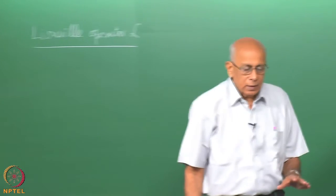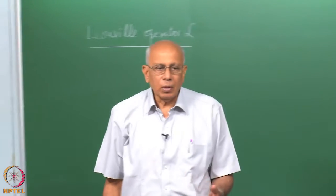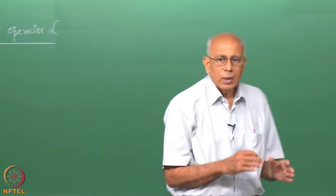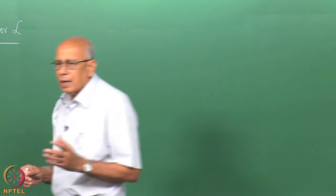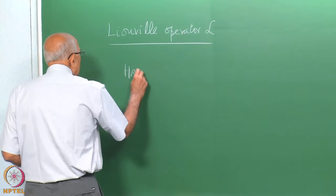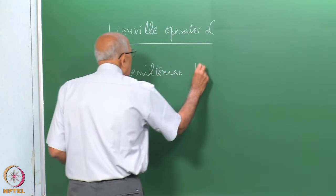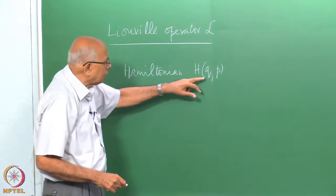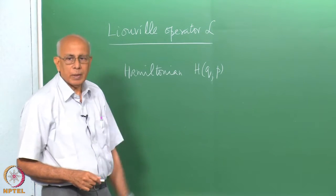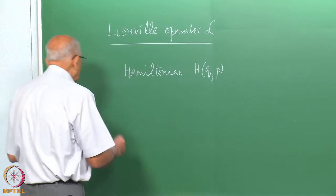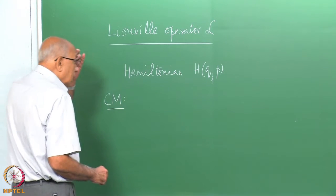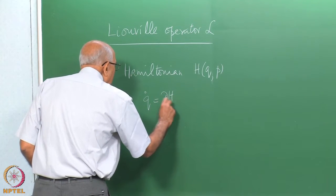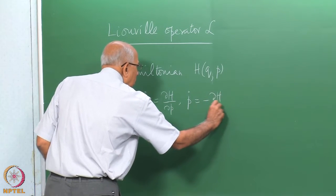We shall always have in mind a Hamiltonian system. The Hamiltonian is a function of the set of generalized coordinates and conjugate momenta. In classical physics we write this as H(Q, P), where Q and P stand for the full set of generalized coordinates and corresponding conjugate momenta. In classical mechanics, the evolution of these dynamical variables is given by Hamilton's equations: Q-dot = δH/δP and P-dot = −δH/δQ.